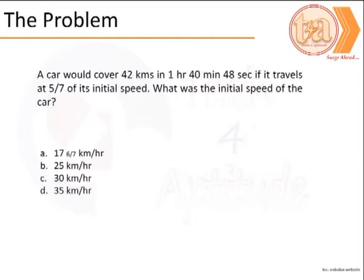What is the initial speed of the car? Our options are A, 17 6/7 km/h, B, 25 km/h, C, 30 km/h and D, 35 km/h.